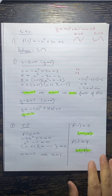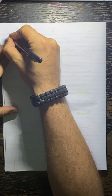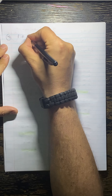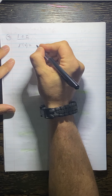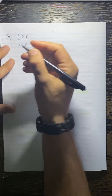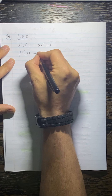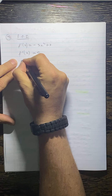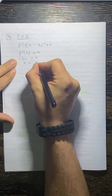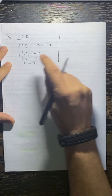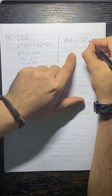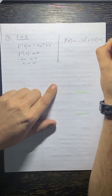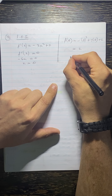The next thing we need to find is the point of inflection. To find the point of inflection, we set the second derivative equal to zero. The first derivative was f dashed x equals minus 3x squared plus 3. So the second derivative f double dashed set equal to zero gives us minus 6x equals zero, so x equals 0. I take that 0 and put it back into the original: f of 0 equals minus 0 cubed plus 3 times 0 plus 2, which gives us 2. So the point of inflection is 0, 2.